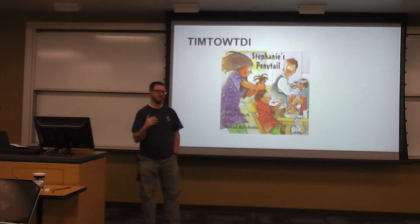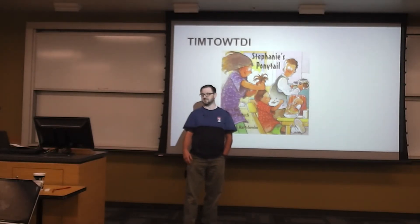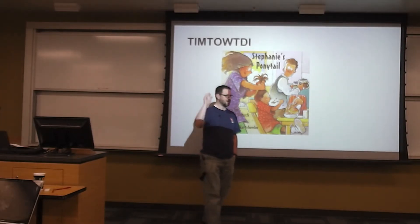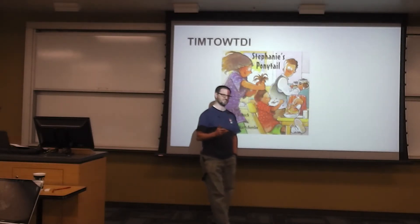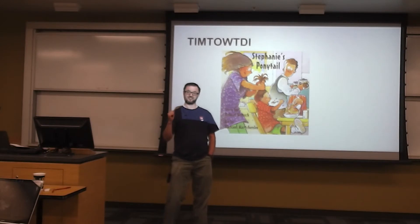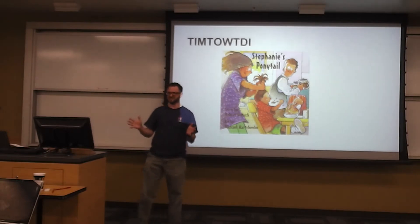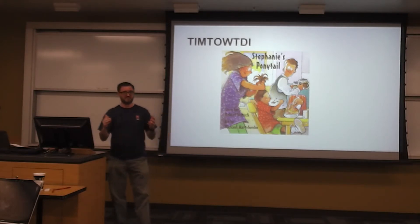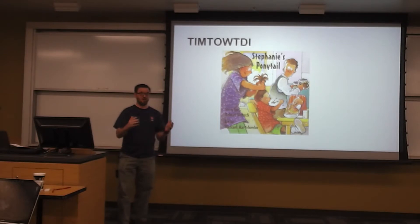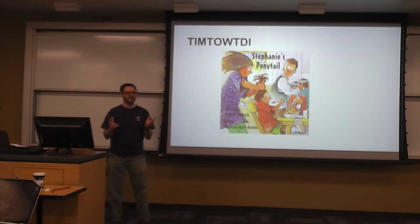She goes home and her mom asks if she wants a ponytail coming out the back. Stephanie says no — she wants one coming out the side, right above her ear. Her mom says 'are you sure? That's very strange.' Stephanie says 'yeah, why not?' So her mom gives her a ponytail coming out the side above her ear. She goes to school, the kids say 'ugly, ugly, very ugly,' and she says 'it's my ponytail and I like it.' The next day all the kids have ponytails coming out the side, and she says 'you're just a bunch of copycats. Think for yourselves.'